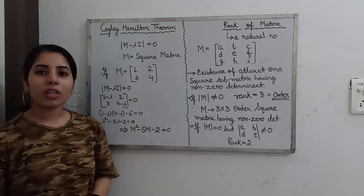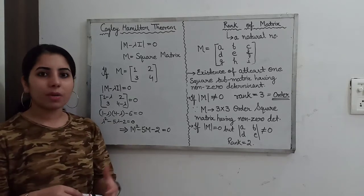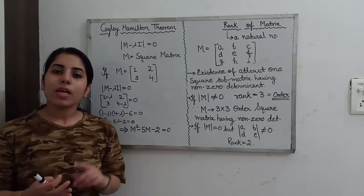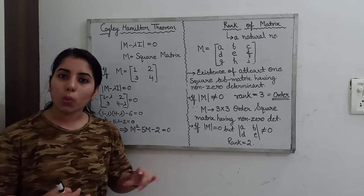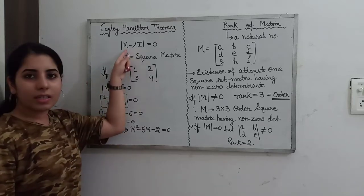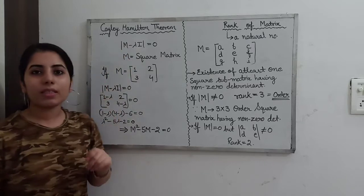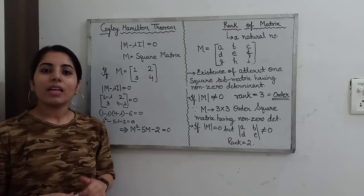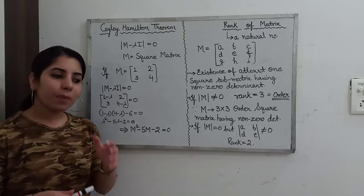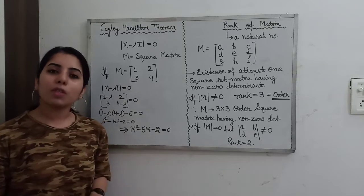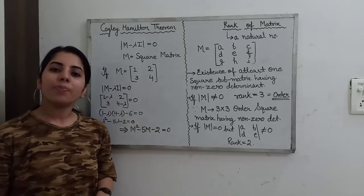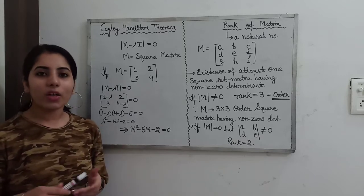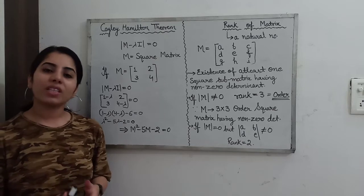Let me repeat the statement so that it will be clear to everyone. Every square matrix satisfies its own characteristic equation. When you find this determinant, lambda represents the eigenvalues, so you will get the equation in terms of lambda. According to the Cayley-Hamilton theorem, if in place of lambda you put the matrix for which you found the characteristic equation, that equation will also be satisfied by that particular matrix. I hope the example I will discuss here will make things clearer.